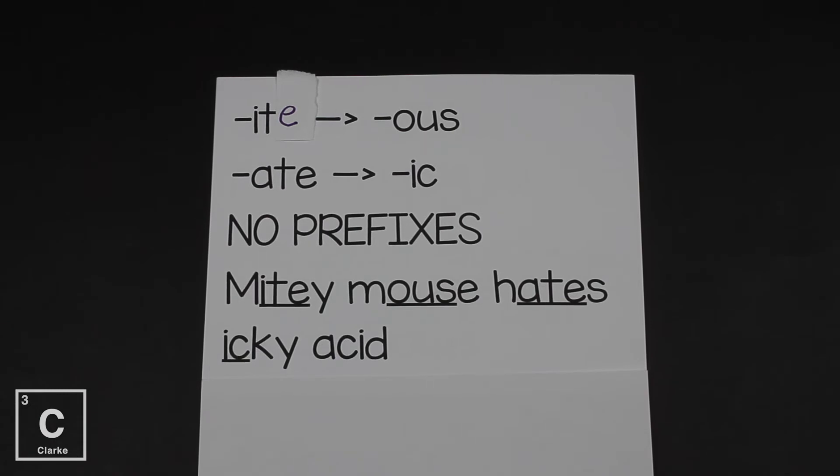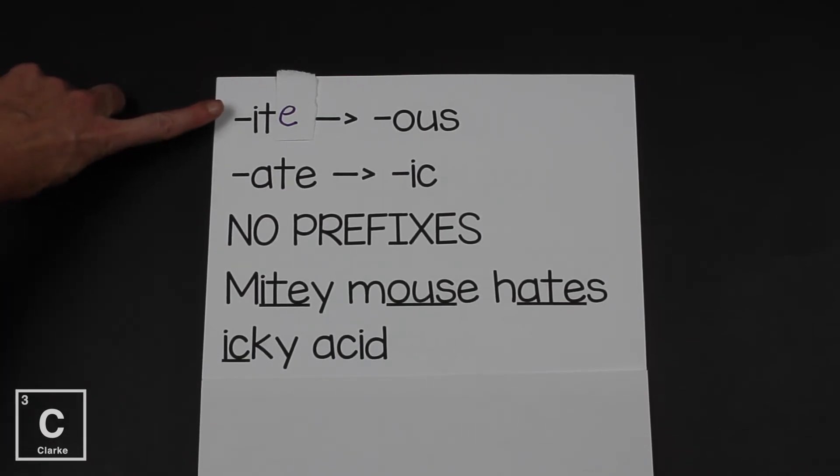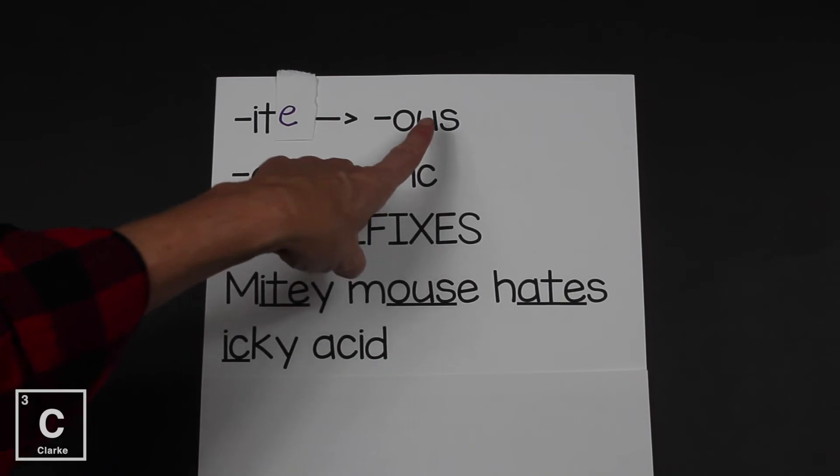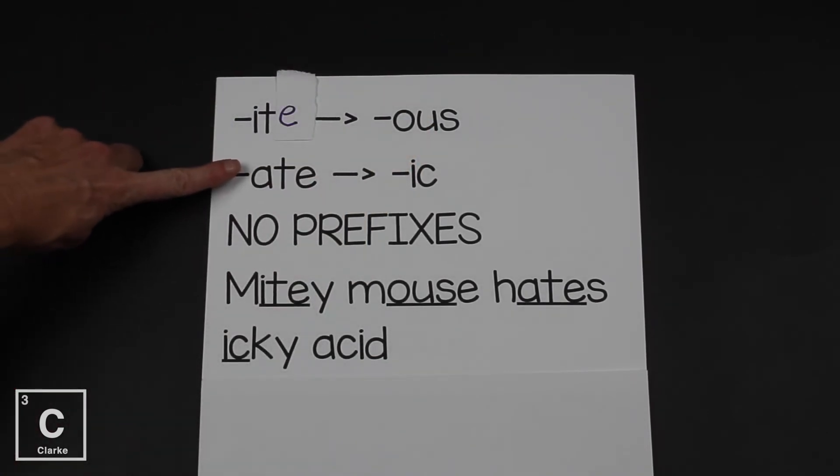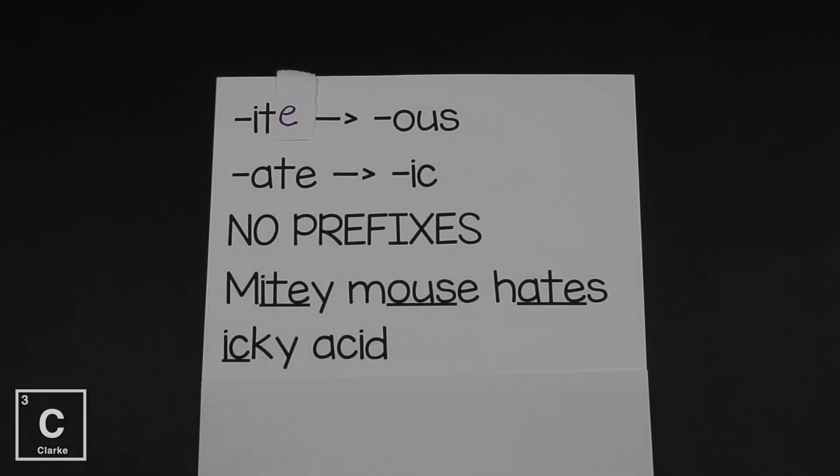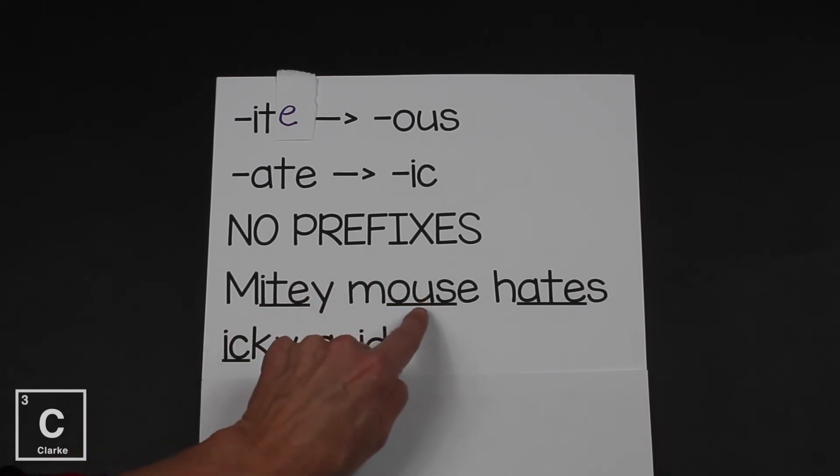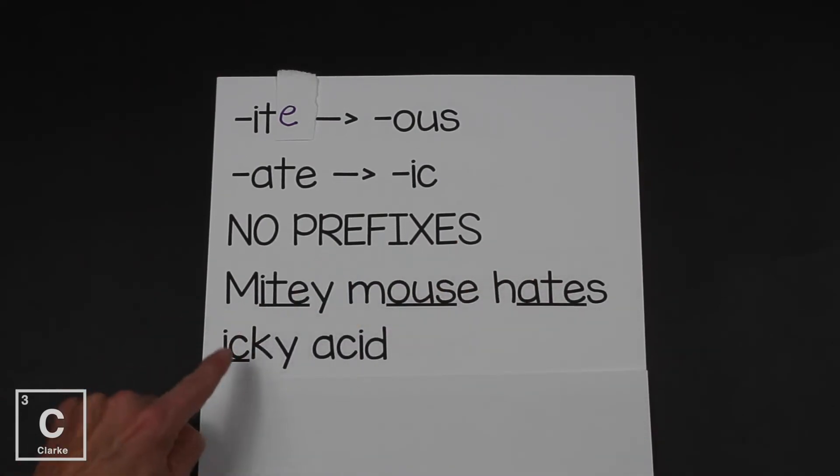Now I have this mnemonic device to help us remember that ite ending of a polyatomic ion changes to ous. An ate polyatomic ion ending changes to ic. And that is mighty mouse hates icky acid. Now I know I spelled mighty wrong and I spelled mighty the way it is so it would contain the ending i-t-e. If a polyatomic ion ends in ite, we're going to change it to ous. And if the polyatomic ion ends in ate, we're going to change it to ic. Mighty mouse hates icky acid.